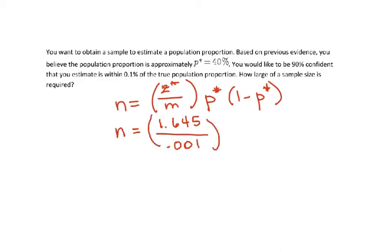We'll take that and multiply it by p star, which they give you, which is an estimate. And it's not a p hat because you haven't actually taken a group from the population. It's just what you believe, it's an estimate. The p star we're given is 0.4, and then 1 minus that p star is 0.6.